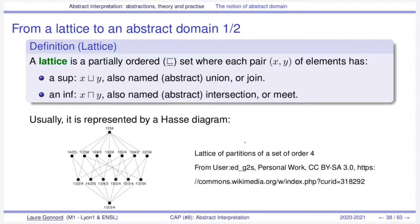Let's begin with completing a lattice into an abstract domain. A lattice is a partially ordered set where each pair of elements has a supremum (join) denoted by union, and an infimum (meet) denoted by square intersection. Usually this kind of mathematical structure is represented by a Hasse diagram where the biggest elements are in the upper side of the diagram and the lesser elements are at the bottom.